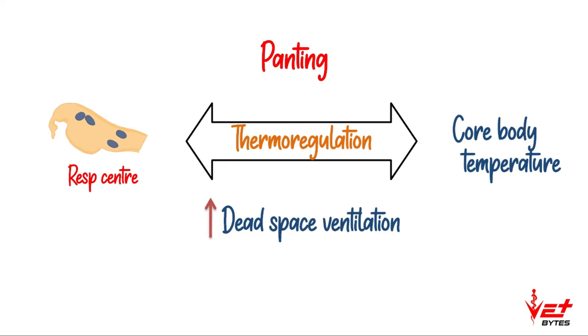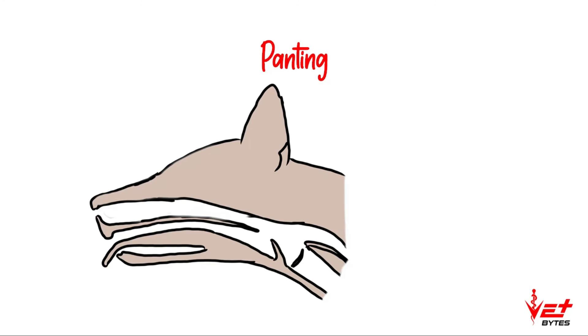When dead space ventilation increases, there will be increased evaporation of fluids and thereby heat dissipation occurs. Panting can occur in three patterns.